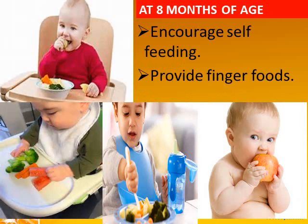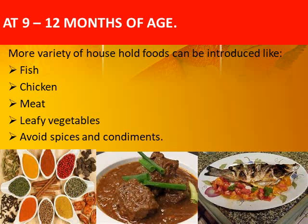At the age of eight months, encourage self-feeding and provide finger foods to encourage the child to feed themselves. From 9 to 12 months, we can give things easily available like fish, chicken, meat, and leafy vegetables. Here we have a special note: avoid spices and condiments.